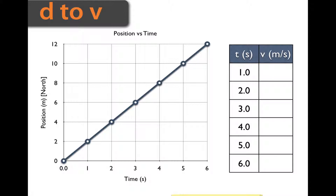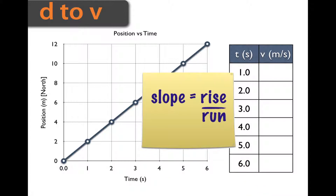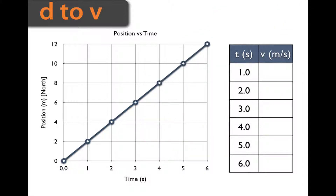So what we need to do on a position-time graph is to simply solve for the slope — that'll give us the velocity we're looking for. All right, so let's pick a first point.